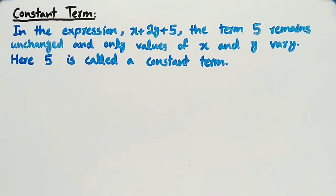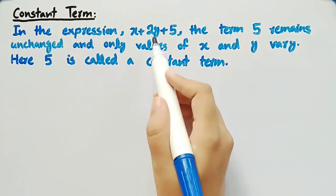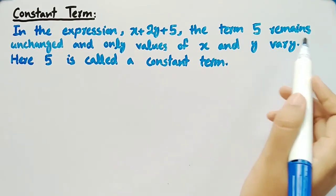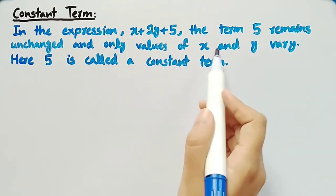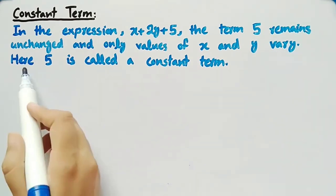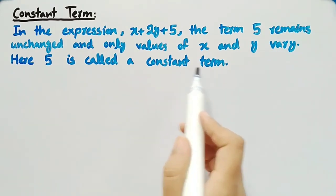Let's see what is constant term. In the expression x plus 2y plus 5, the term 5 remains unchanged and only values of x and y vary. Here 5 is called a constant term.